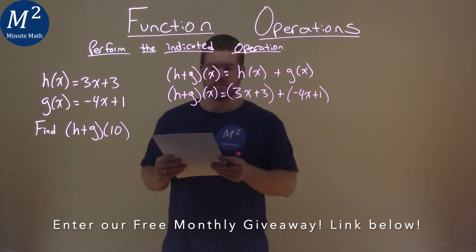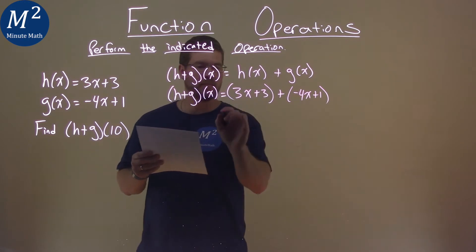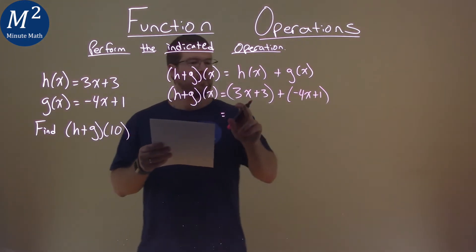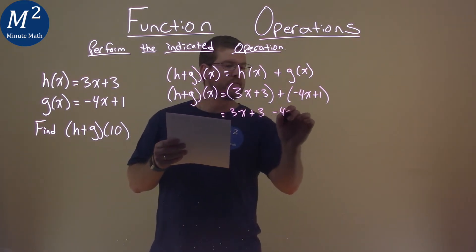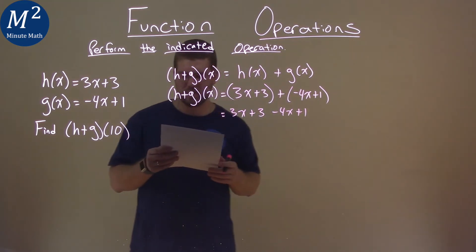Now what I want to do is combine them. So let's keep this going: 3x plus 3 minus 4x plus 1. Kind of makes it a little easier to see.